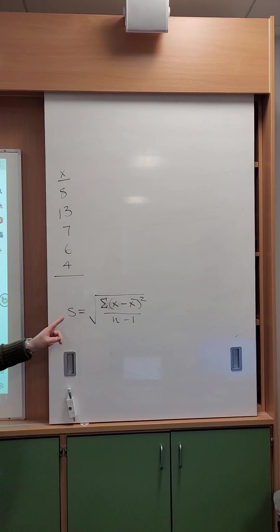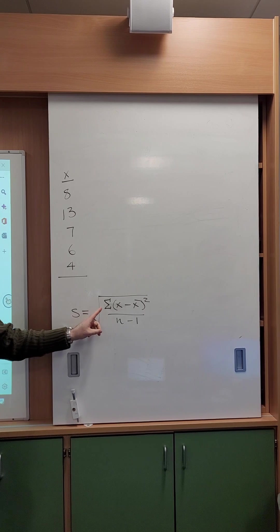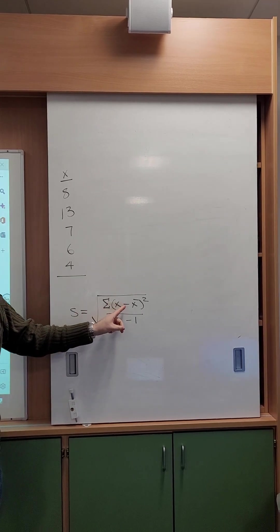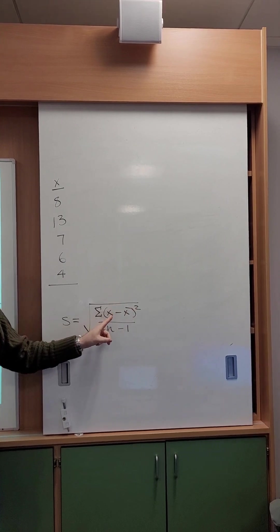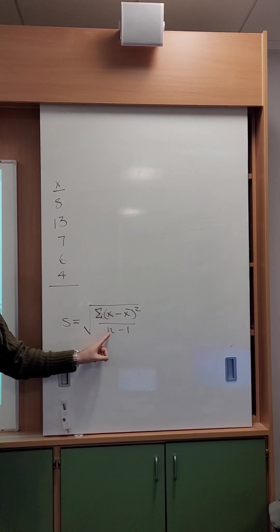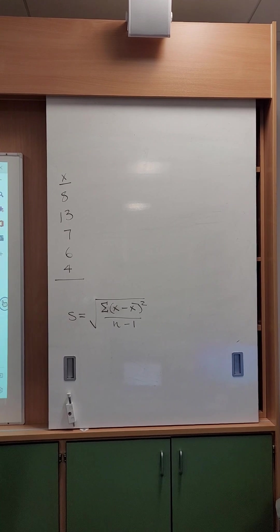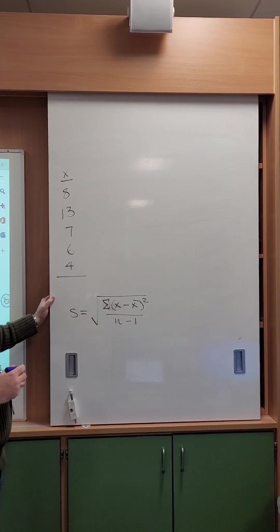And we're going to use the formula S equals the sum of X take away X bar, X bar being the mean, all squared, and we're going to take that over N minus 1. This formula is supplied in the exam.